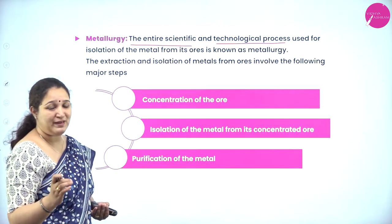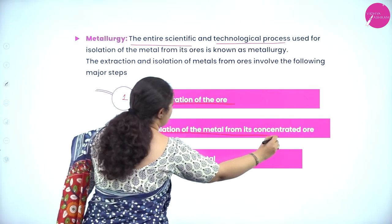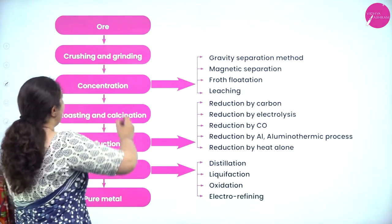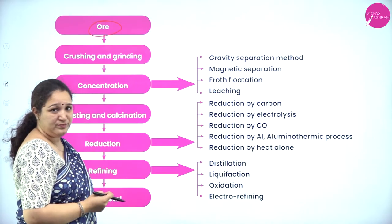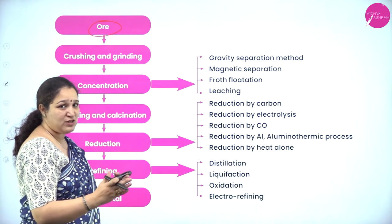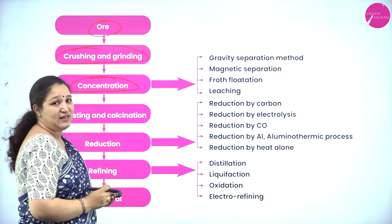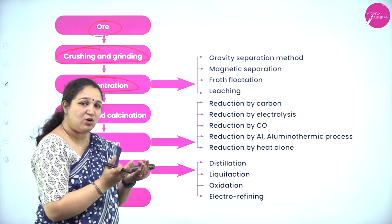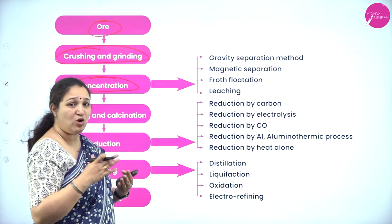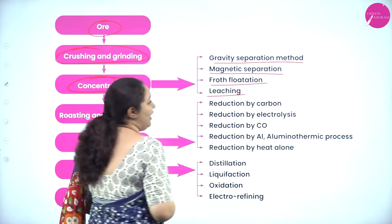The extraction and isolation of metal from its ore involves three major steps: concentration of the ore, isolation of the metal from its concentrated ore, and then purification of the metal. First we get the ore — ores are those minerals from which we can extract the metal profitably. The ore is crushed and ground, then the concentration process removes all the gangue particles. This can be of four different types: gravity separation method, magnetic separation, froth flotation, and leaching.